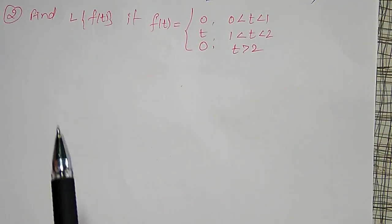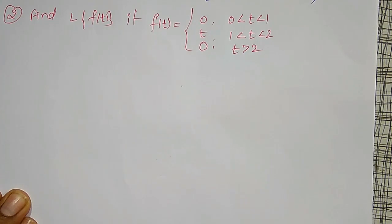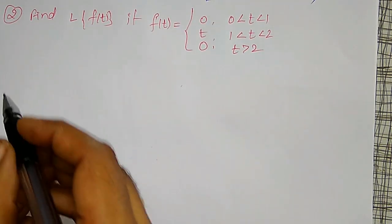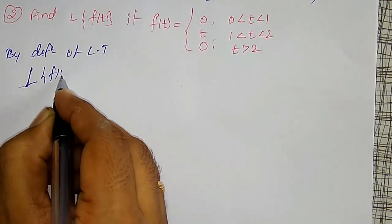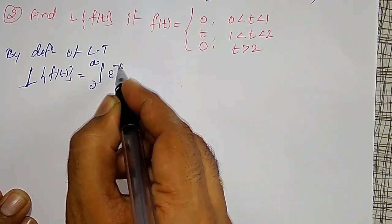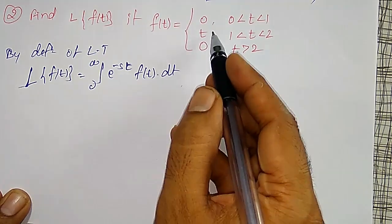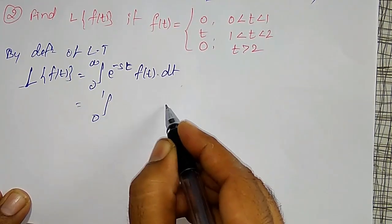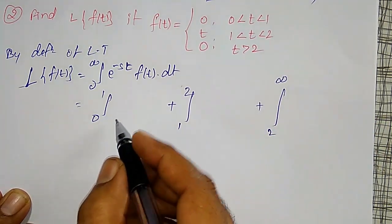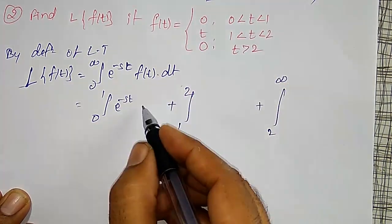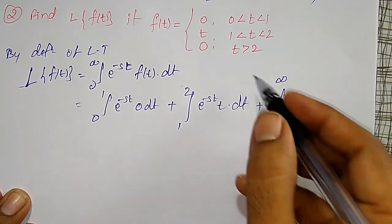Next example: find the Laplace Transform where f(t) = 0 between 0 to 1, f(t) = t between 1 to 2, and f(t) = 0 for t greater than 2. By the definition, L{f(t)} = integration from 0 to infinity of e^(−st) f(t) dt. I split this as integrals from 0 to 1, 1 to 2, and 2 to infinity. The first and third integrals are zero since f(t) = 0 there; only the integral from 1 to 2 of e^(−st)·t dt remains.